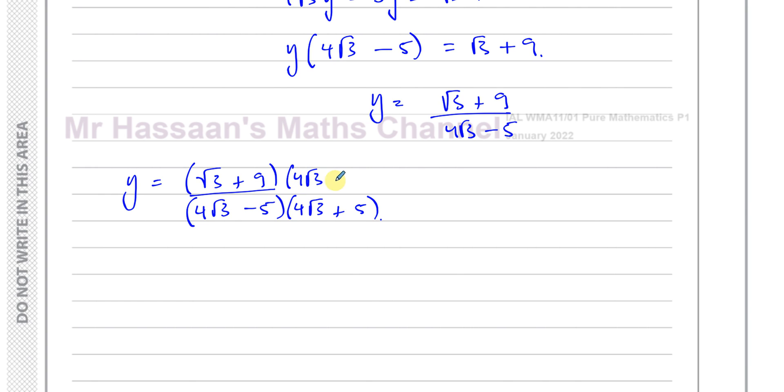If I multiply the denominator by 4√3 + 5, then I must multiply the numerator by the same thing. So now let's multiply that. √3 times 4√3 is like 4 times 3, which gives us 12. √3 times 5 is 5√3. 9 times 4√3 is 36√3. And 9 times 5 is 45. Over, and when I expand this, I'll have 4√3 times 4√3, which is 16 times 3. And then the middle term will disappear. You'll have 20√3 minus 20√3, which is 0. Then minus 5 times 5 is minus 25.